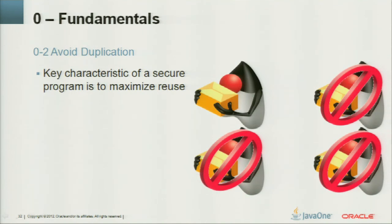Avoid duplication — reuse. A key characteristic of a secure program is to maximize reuse, because you don't have to maintain as much — others do it for you, like Oracle maintaining standard libraries you can reuse. Reuse is king.